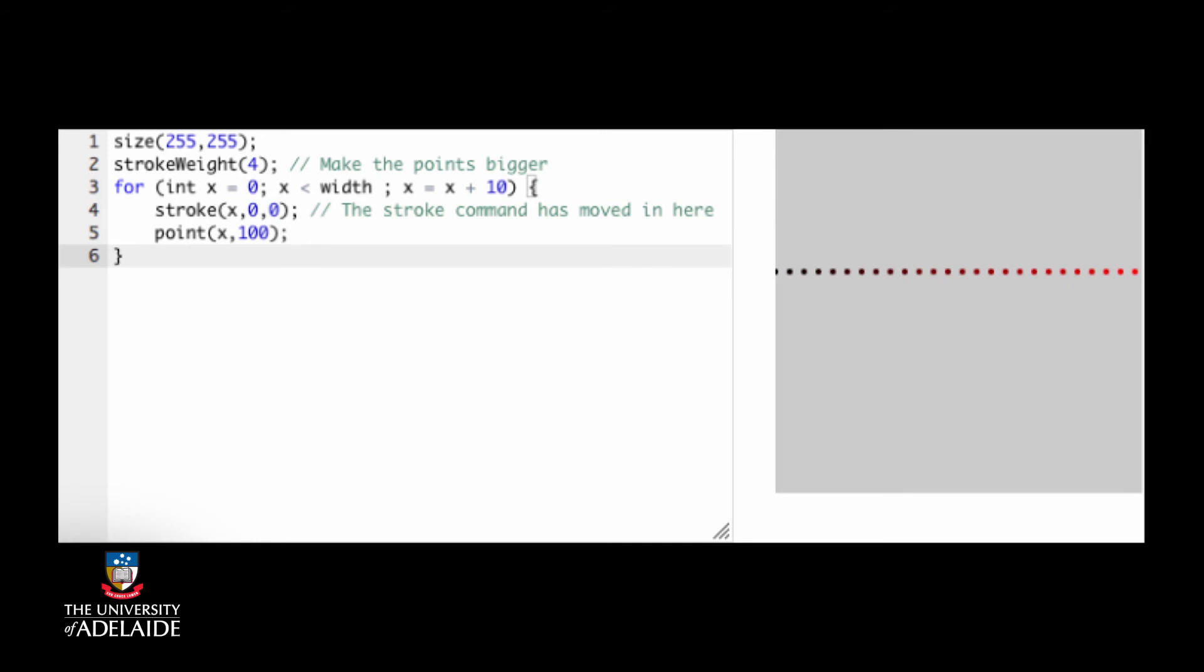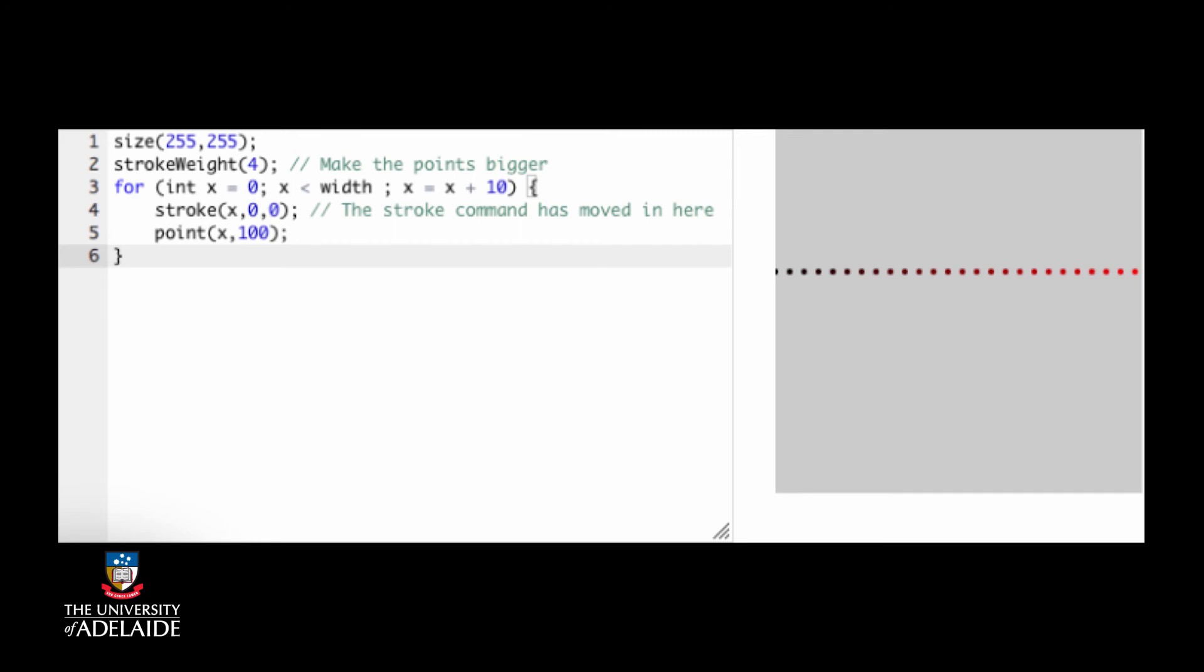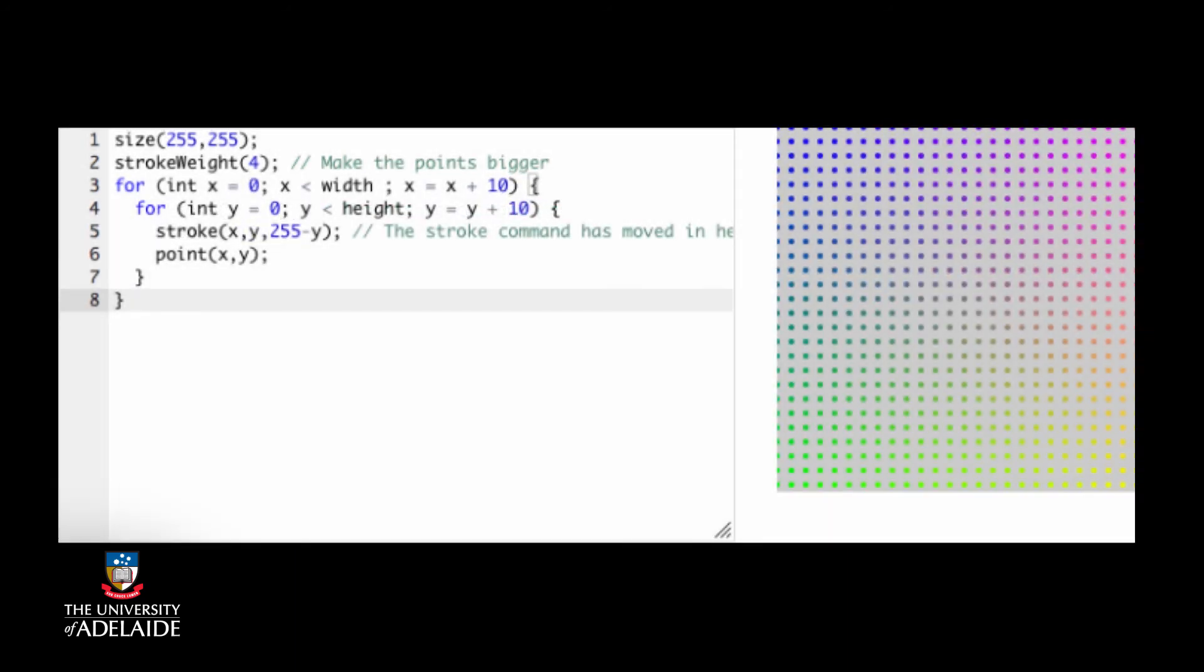Now we put another loop inside this to change the y values as well. Now we're seeing x and y change as the for loop moves along. When y is small at the top of the picture, we just see x moving from black to red as before. As y gets bigger, we see the influence of the green as we add more green.